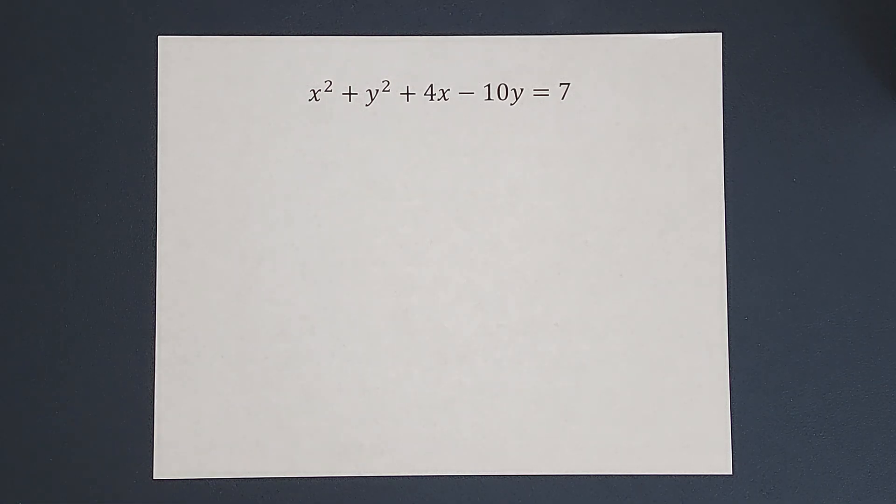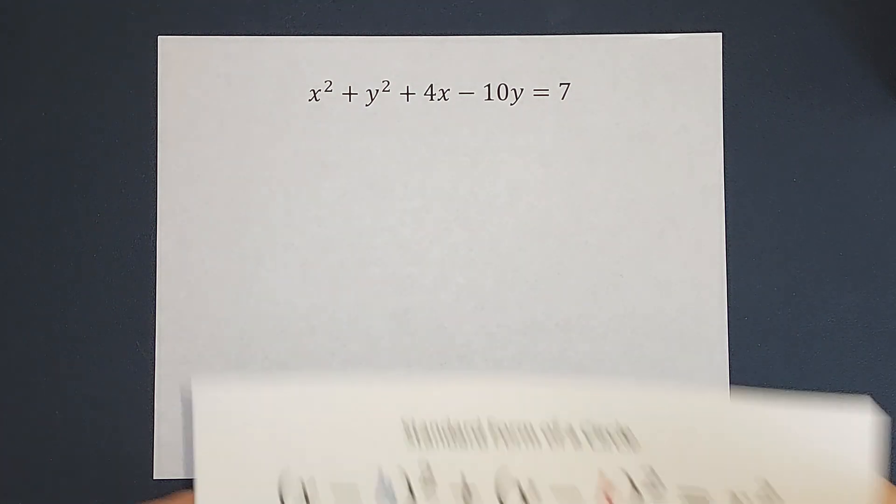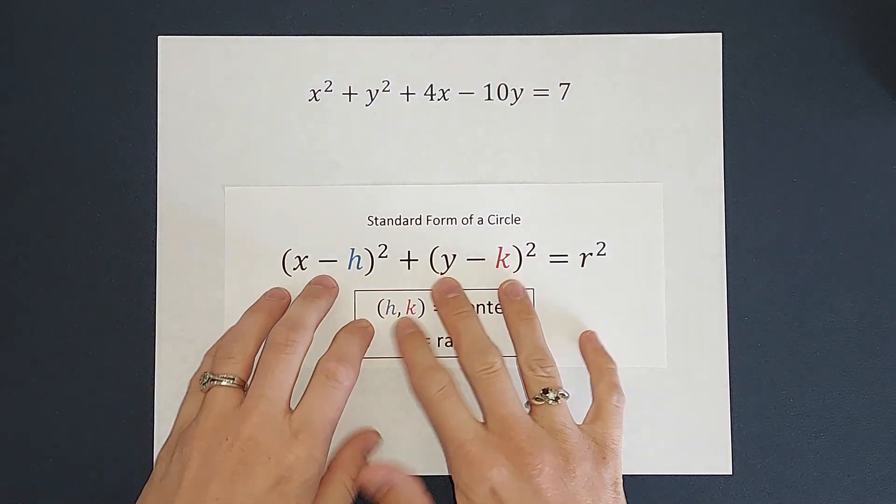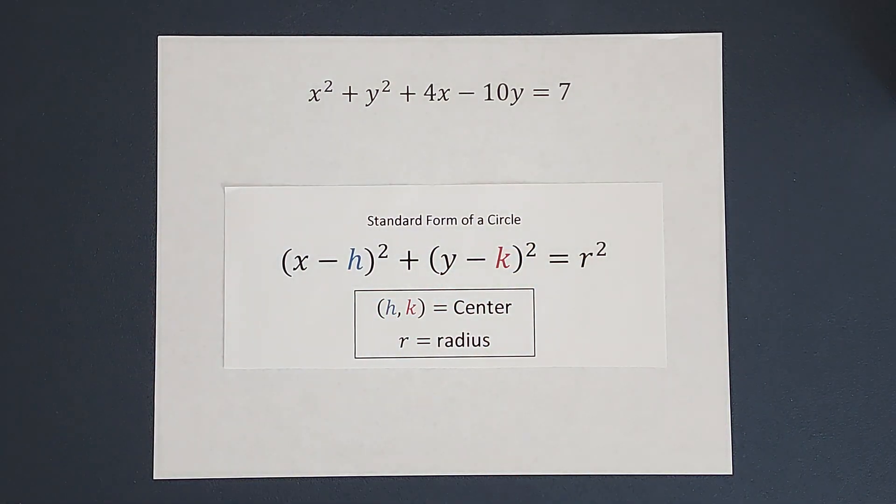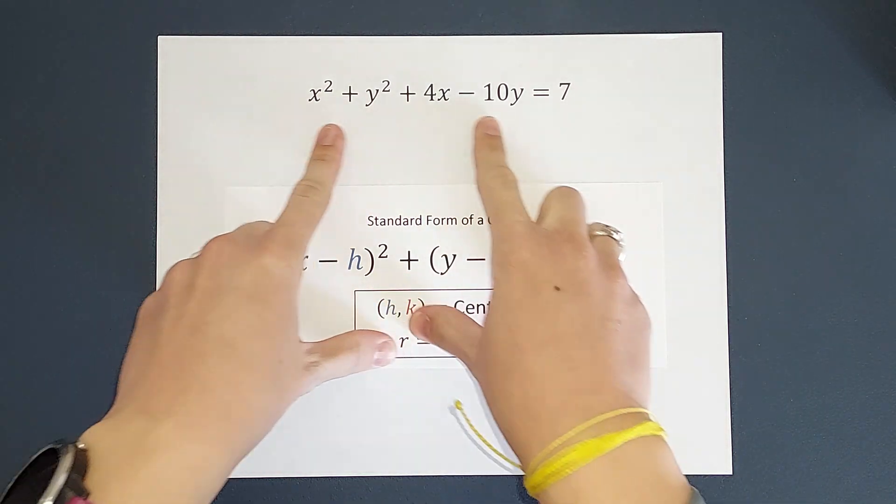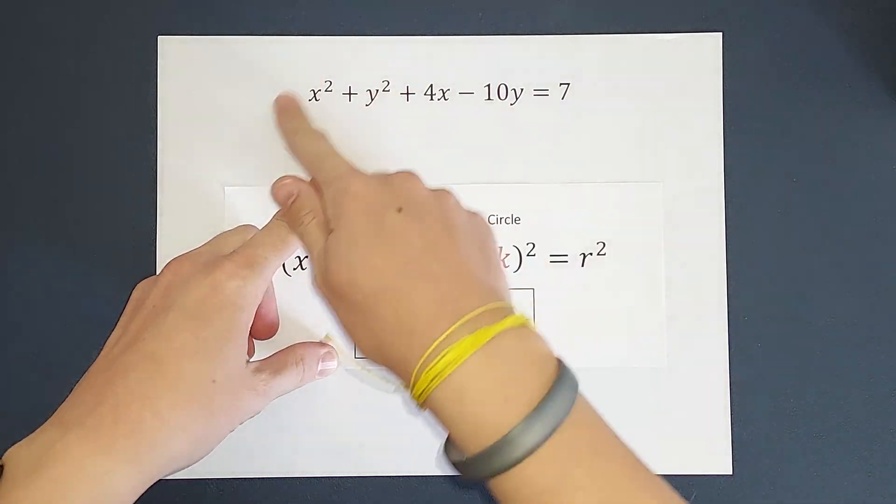Hey guys, we've been given this equation and we're being asked to graph the circle. Now you've probably been graphing circles in standard form, right? When it's in this form, it's nice and easy to center and the radius are right in front of you. But now you're like, what do I do when it looks like this, right?